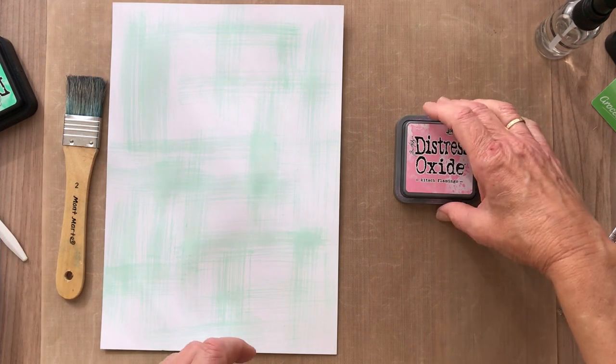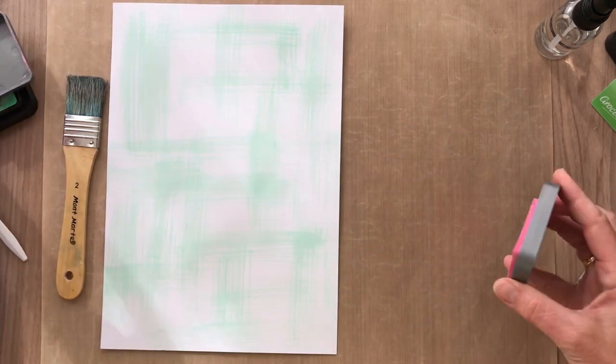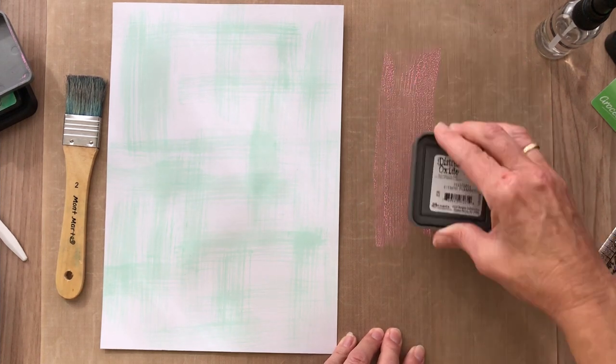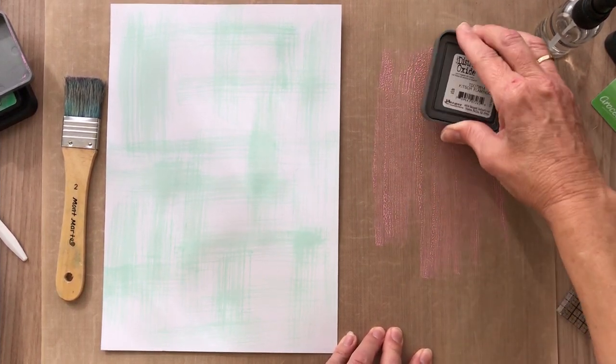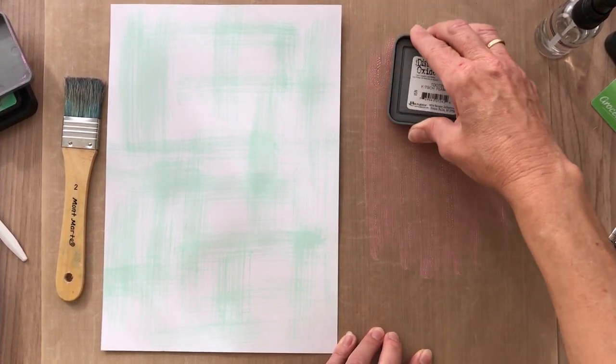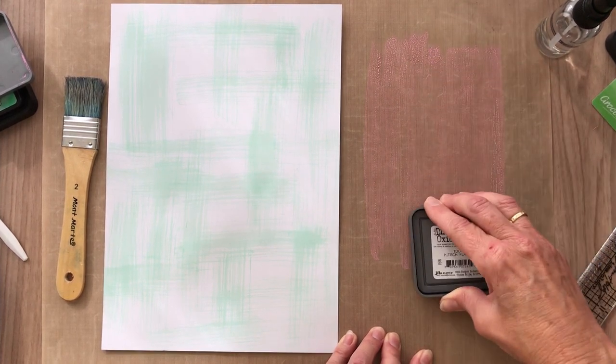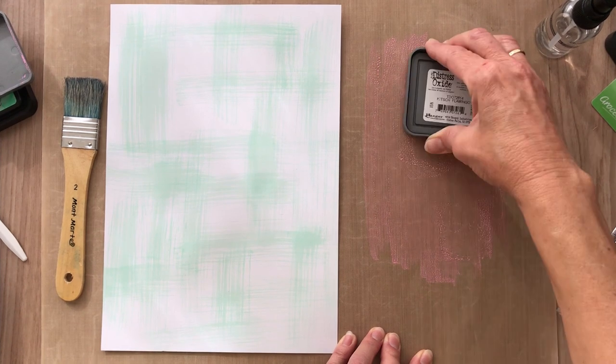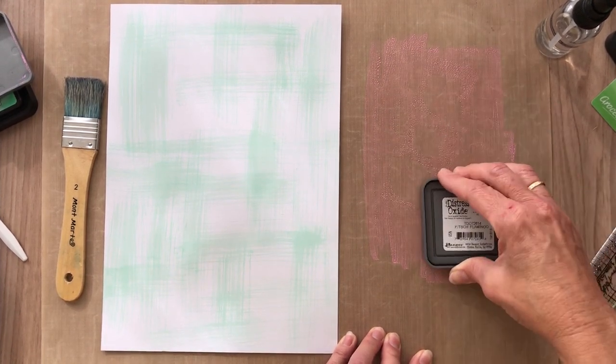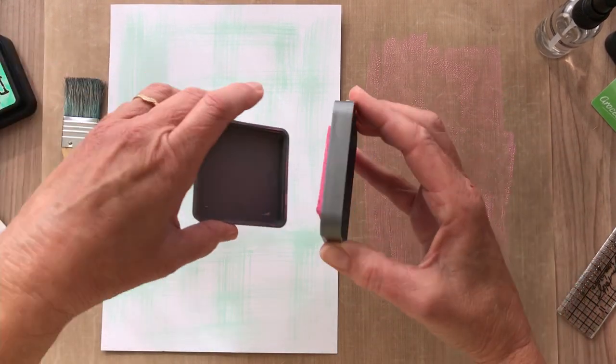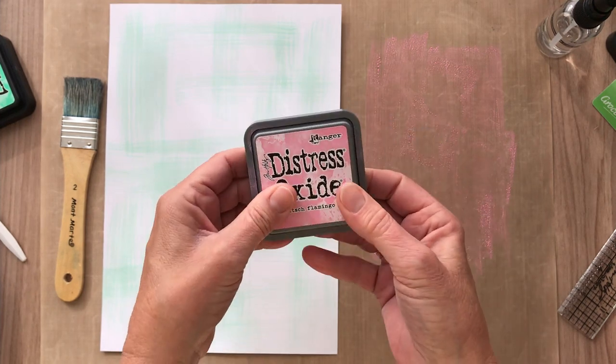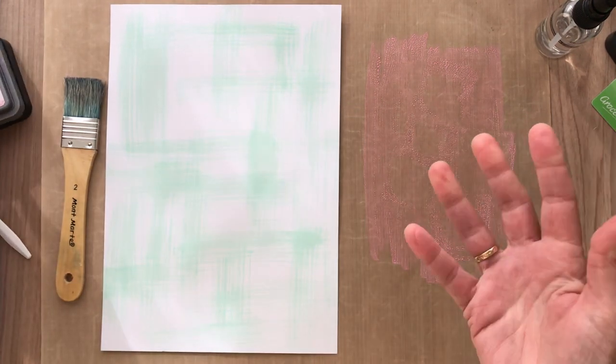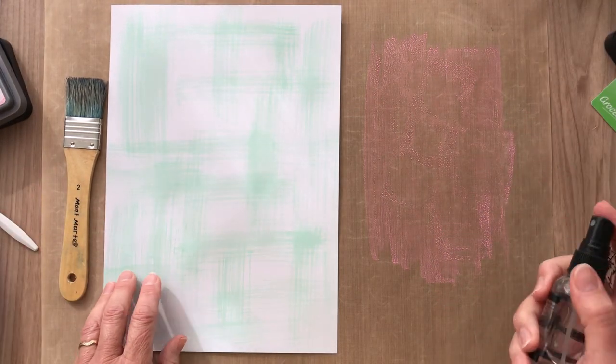Now I'm going to take my Kitsch Flamingo and repeat this process. This time I'm using my oxide ink. I always like to use both the plain and the oxide because I like the way they play together. The oxide likes to sit on top and I kind of like that feature. Make sure you choose the oxide color you want as your more dominant color that you want to show through a little more.